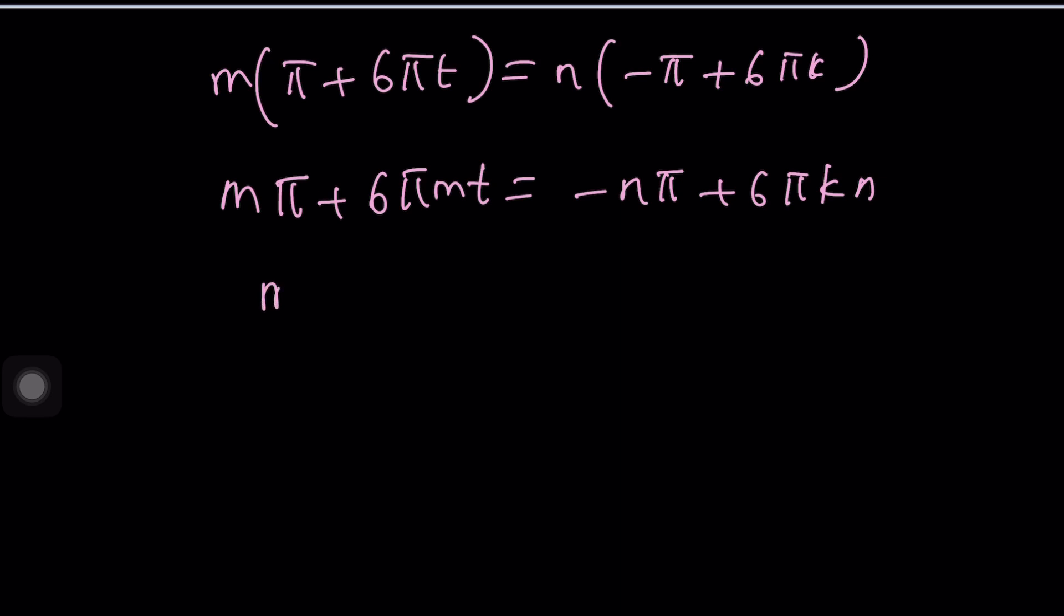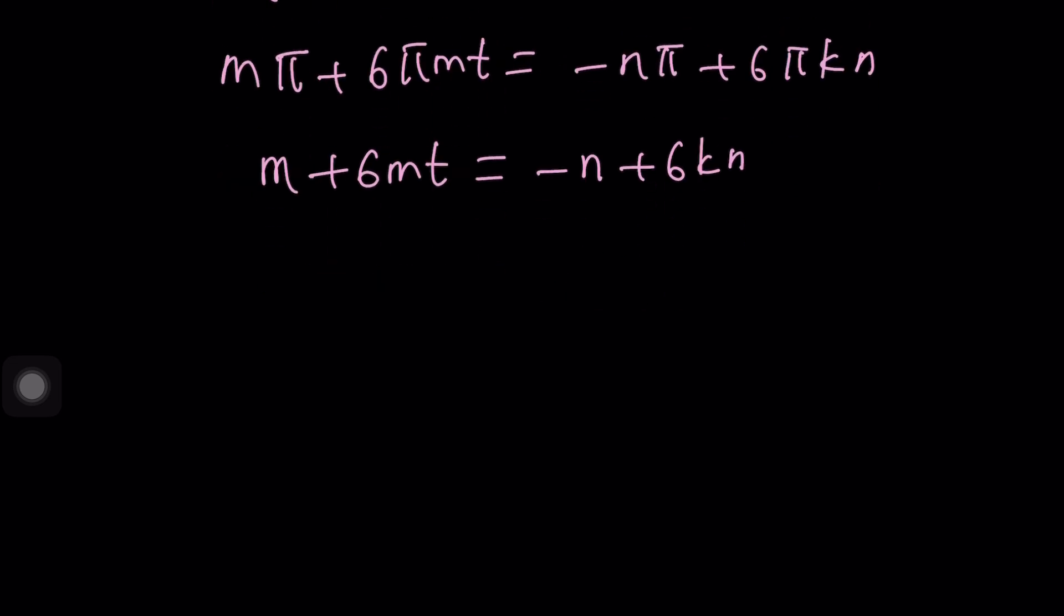I just realized, I could have done that earlier. But anyways m + 6mt = -n + 6kn. And of course in this case we can factor out an m and write this as (6t + 1)·m and that is (6k - 1)·n.